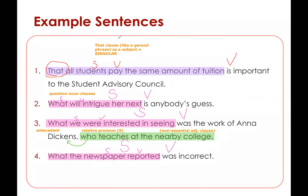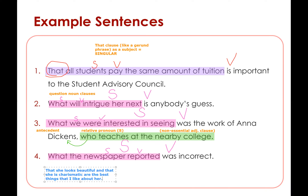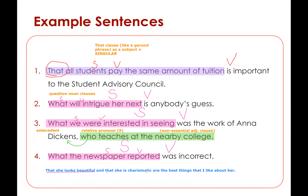Keep in mind that if you have a compound noun clause as subject, it would be plural. For example: that she looks beautiful and that she is charismatic are the best things that I like about her. As you can see, I have a compound noun clause as subject, and that is why the verb would be plural.